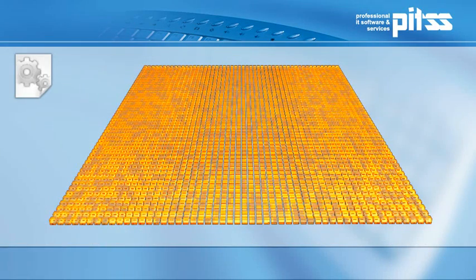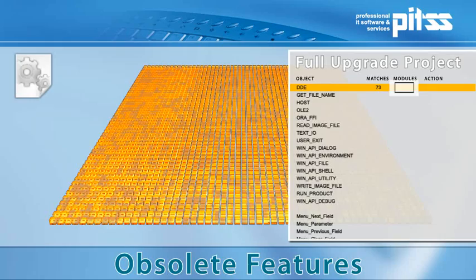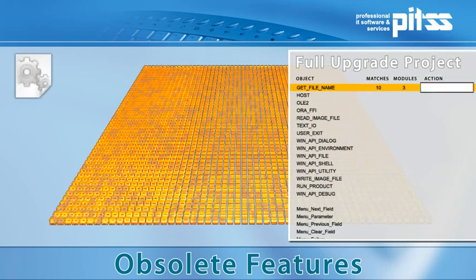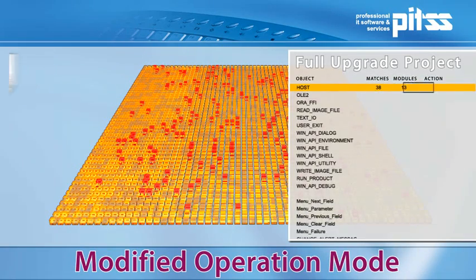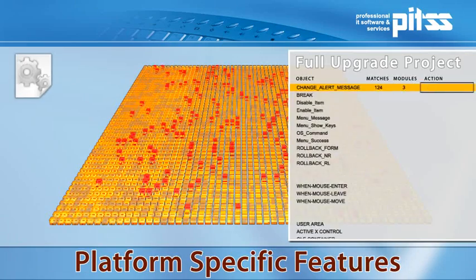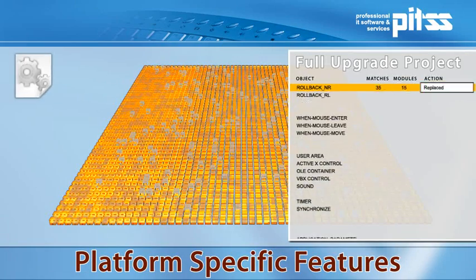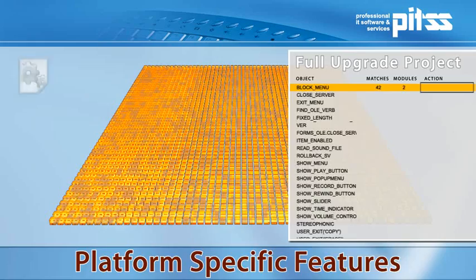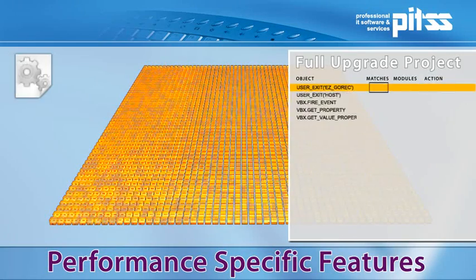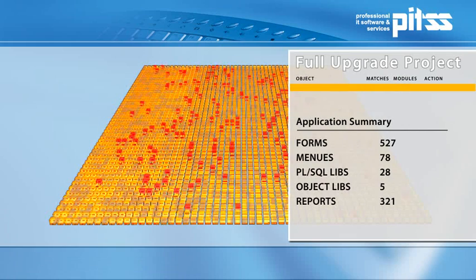PITSCOM is able to precisely analyze forms with regard to the upgrade process, even those with several thousands of applications, within just a few hours, and can evaluate an upgrade from Forms 10G to 11G. After the analysis and definition of the upgrade project, the forms application is run through all those templates that realize the implementation by way of search and replace functions in PITSCOM. The result is a 100% automated implementation of customer-specific upgrade projects, which can be repeated and adjusted any time as necessary.